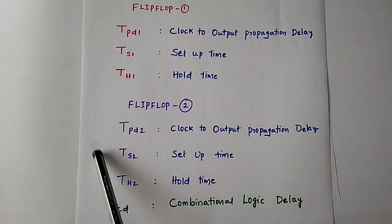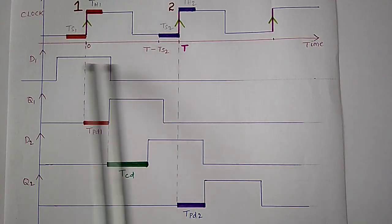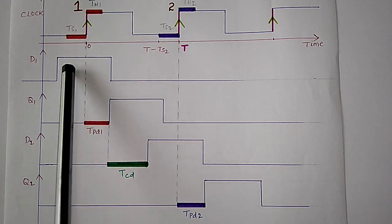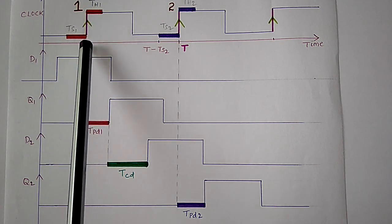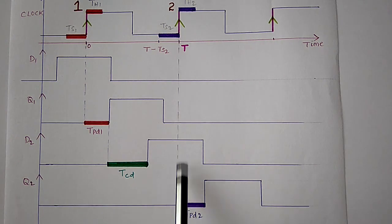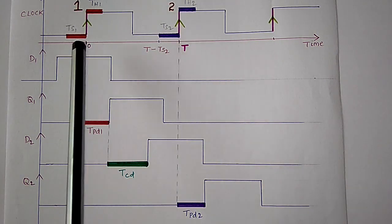From the last lecture we have seen that when input signal is given during first rising clock edge we get it at the output after the second rising edge of the clock. Hence at first rising clock edge flip-flop one stores the input signal and at second rising clock edge flip-flop two stores the input signal.